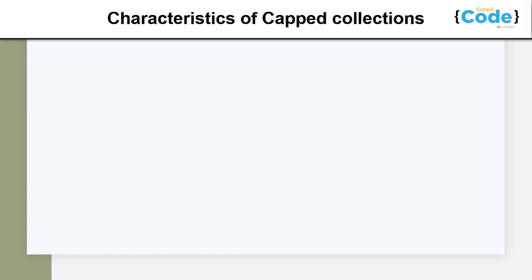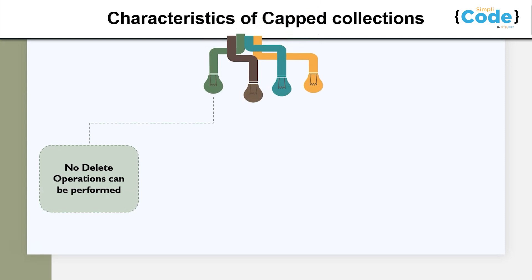Let us discuss some characteristics of capped collections in MongoDB. Firstly, no delete operations can be performed. If you're looking to delete a document from a capped collection, you're looking in the wrong direction, as we cannot delete documents from a capped collection. Old documents in a capped collection can only be deleted automatically upon insertion of new documents when the allocated size has been exhausted or the maximum limit has been reached.